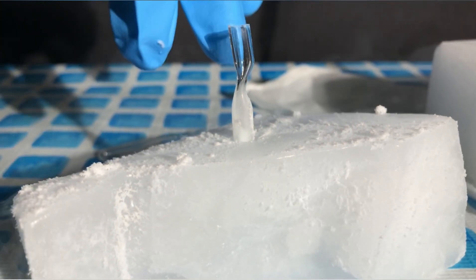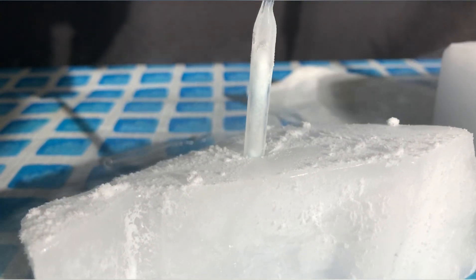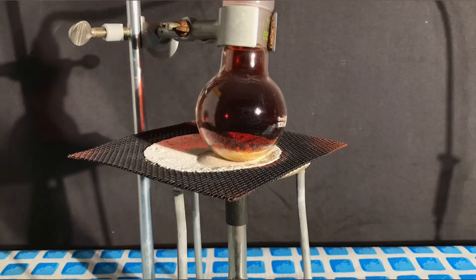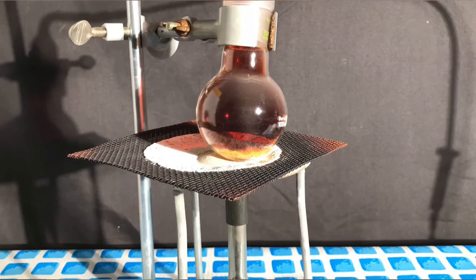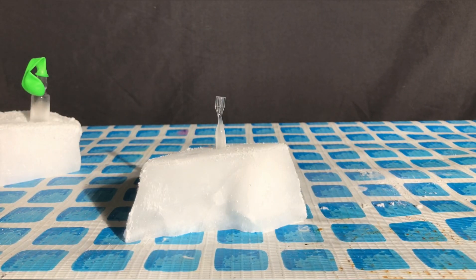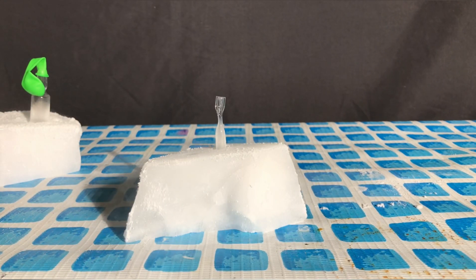Once the ampoule looked like it contained a decent amount of nitrogen dioxide, the syringe needle was taken out of it. A few more ampoules were filled up using this gas. Once they were filled up, I quickly sealed the ampoules using an oxyacetylene torch.